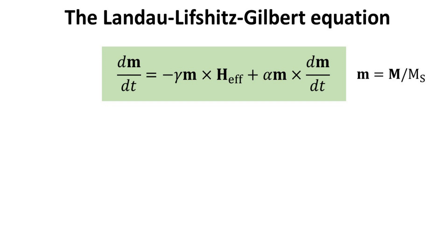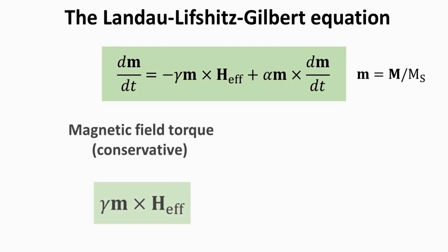Recall that torque can be defined as the rate of change of angular momentum. Thus, torque is analogous to force, just like angular momentum is to linear momentum. At its core, the right-hand side of the equation consists of two main components: the conservative torque and the dissipative torque.